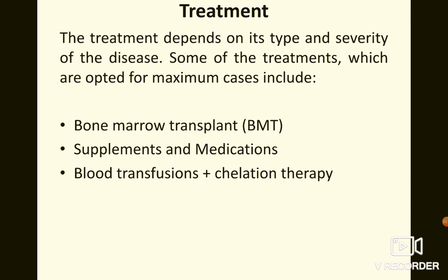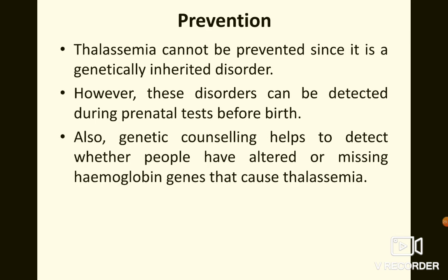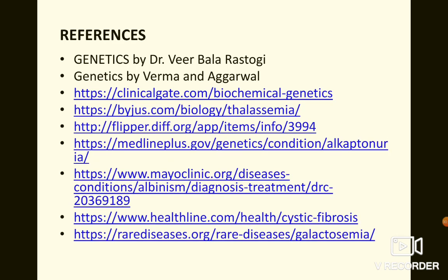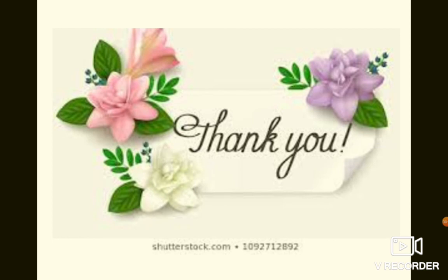Treatment of thalassemia depends on its type and severity and may include bone marrow transplant, supplements and medications, blood transfusions, and chelation therapy. Thalassemia cannot be prevented since it is a genetically inherited disorder; however, it can be detected during prenatal tests before birth. Genetic counseling helps detect whether people have altered or missing hemoglobin genes that run in their family. These are the five genetic diseases covered in this lecture.